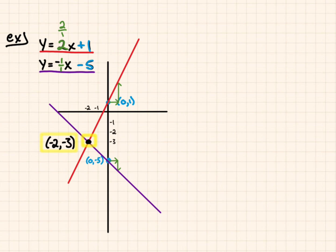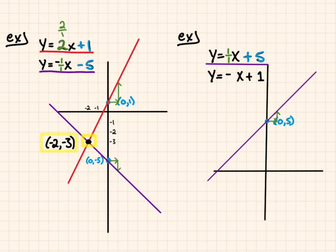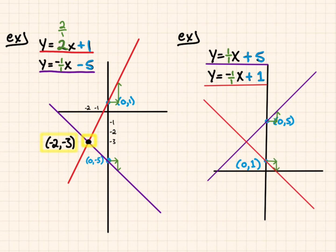Let's try one more. y equals x plus 5, and y equals negative x plus 1. For the first equation, start at positive 5 with a slope of 1 over 1 — every 1 positive in x, go 1 positive in y. For the second equation, start at positive 1, and every 1 positive in x, go negative 1 in y. The solution is negative 2 comma 3.